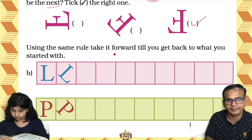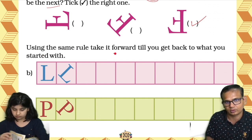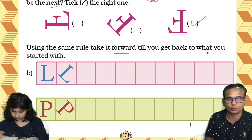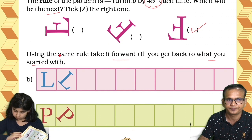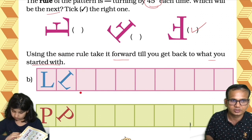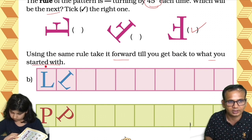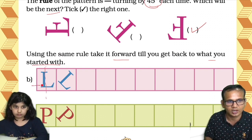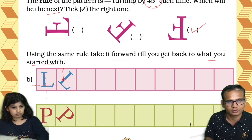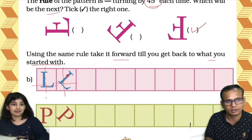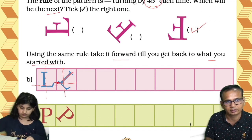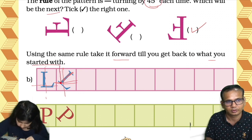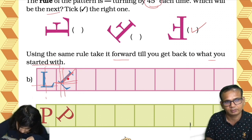Using the same rule, take it forward till you get back to what you started with. Let's do this animation. So this is the letter L — if I draw two half lines and turn it one-eighth, that is one-eighth, nothing but 45 degrees.